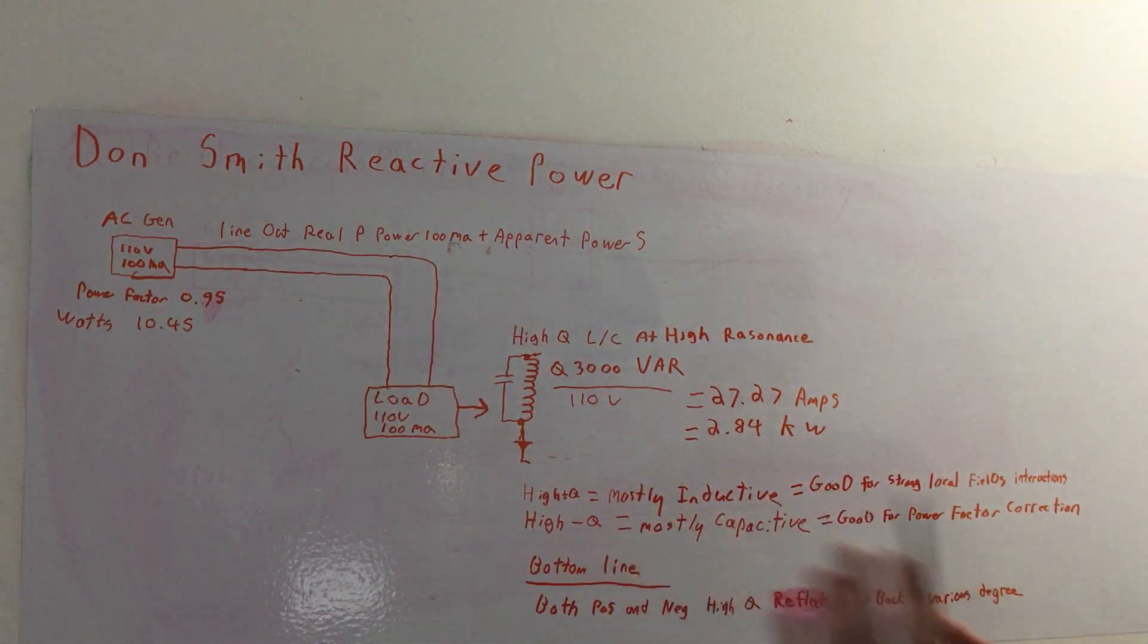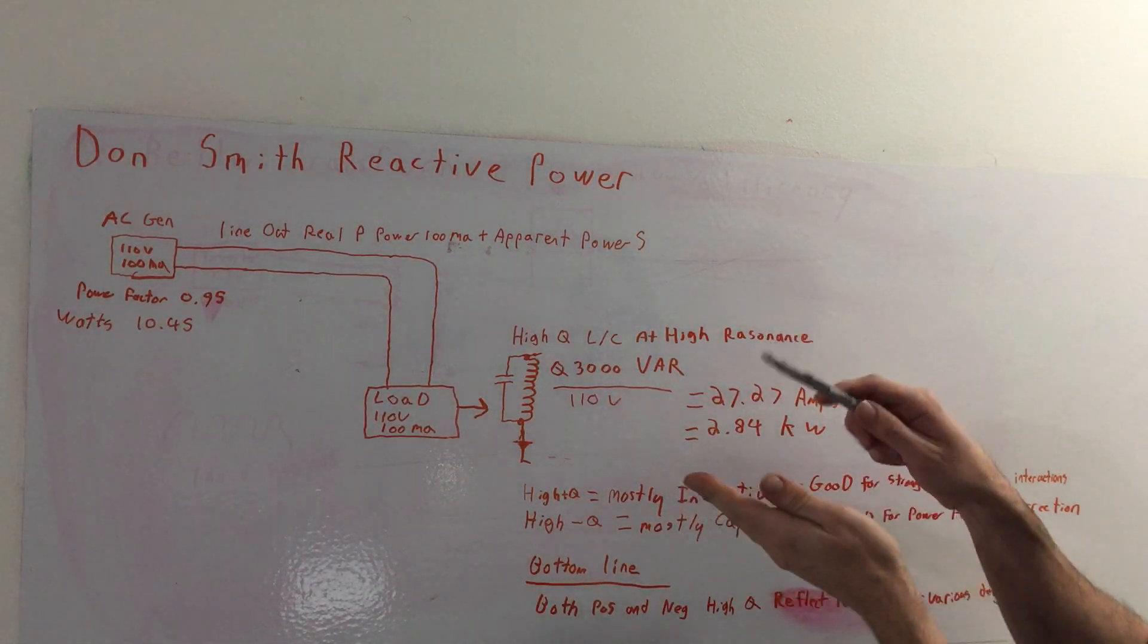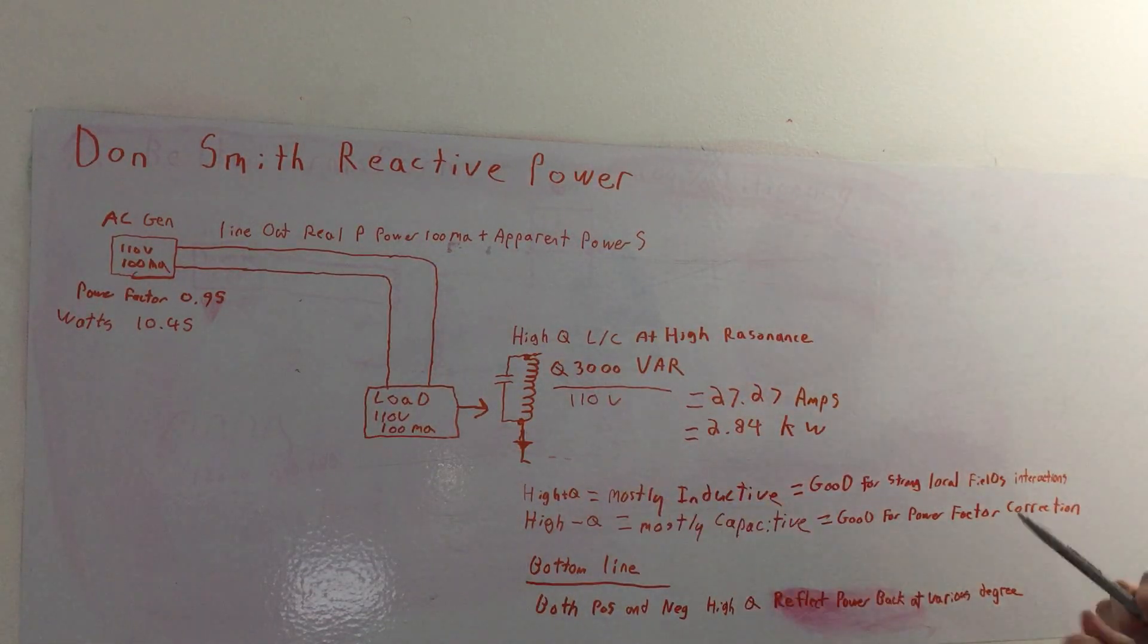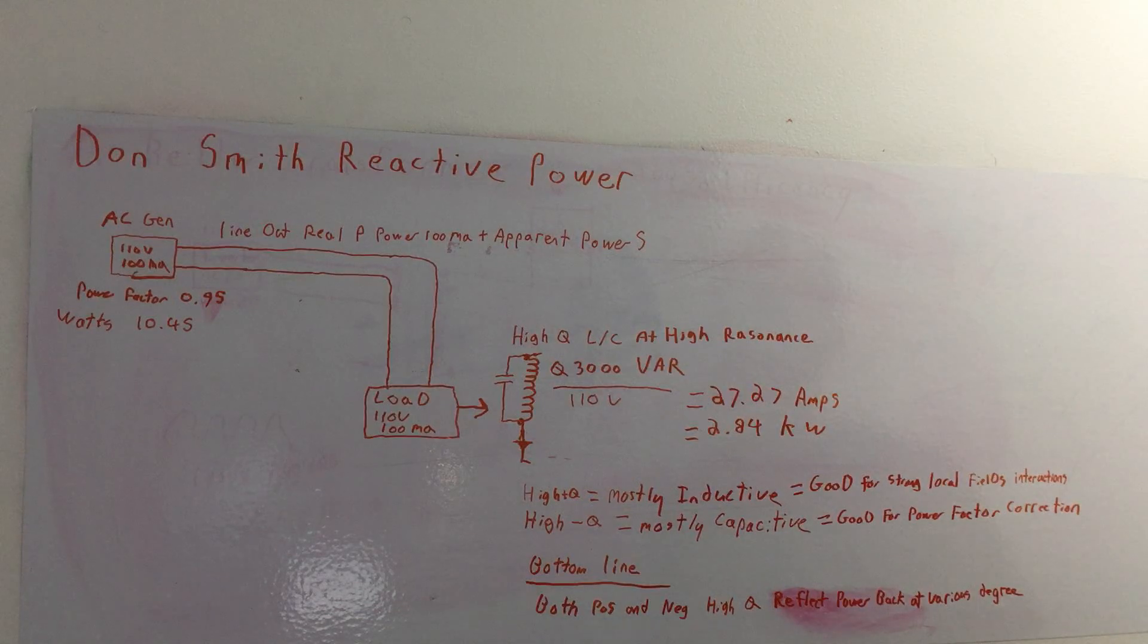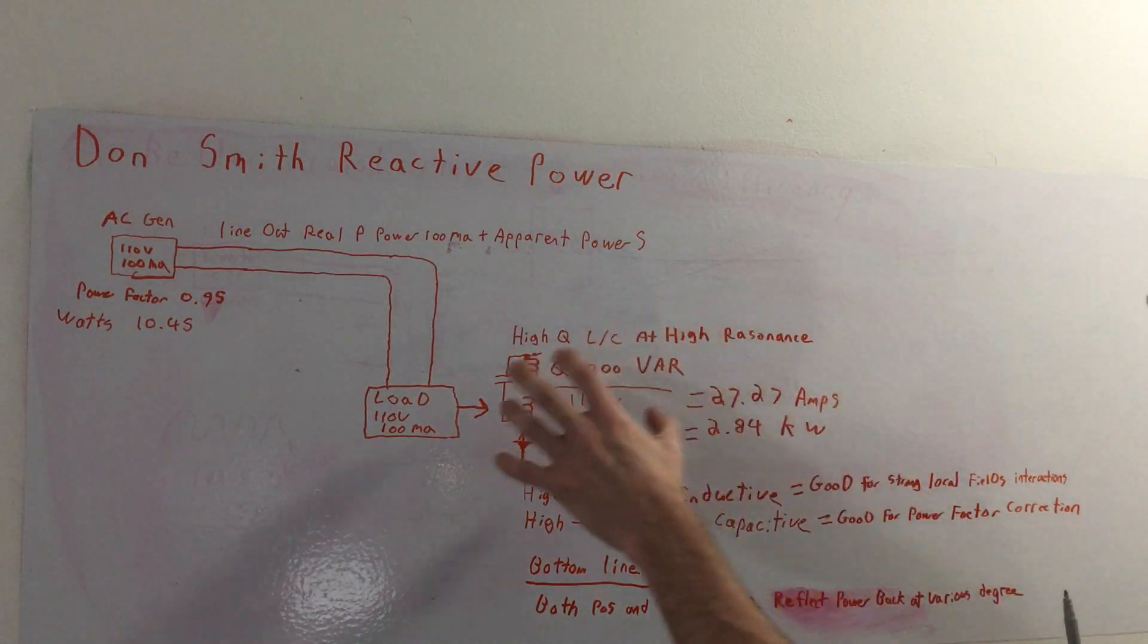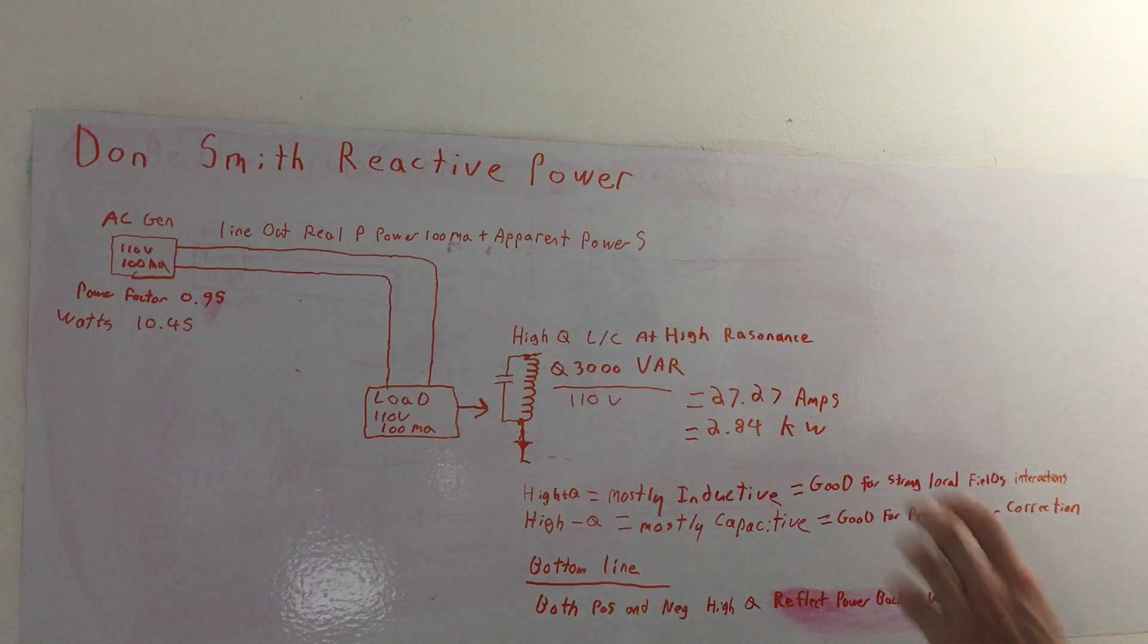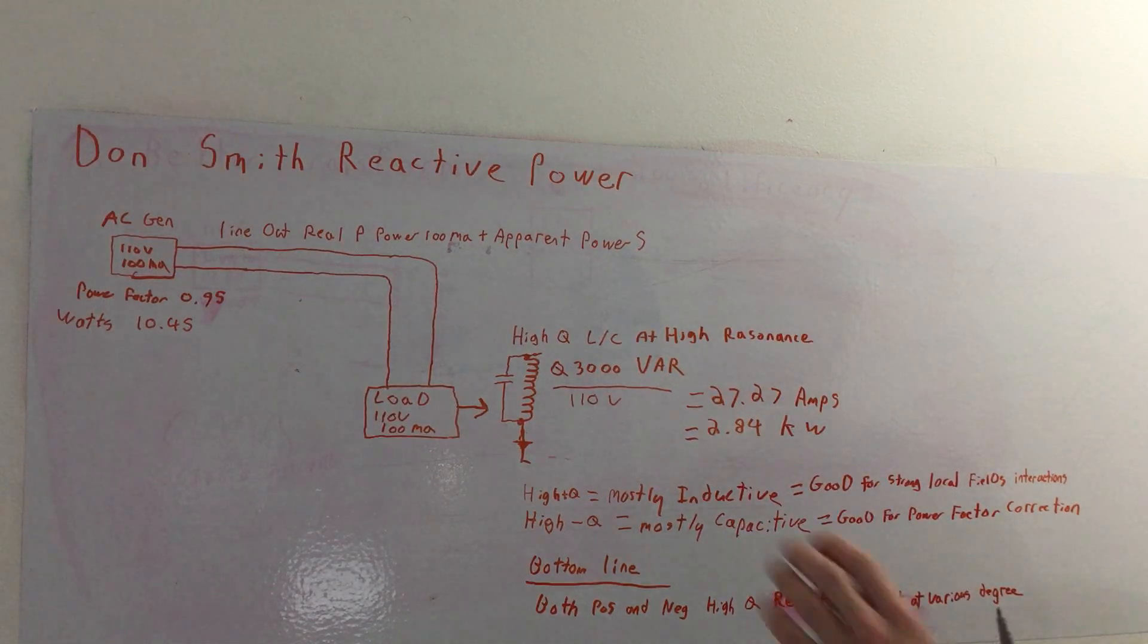Now essentially what happened here, there are some distinct differences. When you have a high Q system, that's when it's mostly inductive. That's good for triggering these high reactive strong local field interactions, like Don Smith does with his coils and stuff. Now a high Q in the negative range means that the system is mostly capacitive. This would be most capacitive power supplies that consumer base runs in the mains.